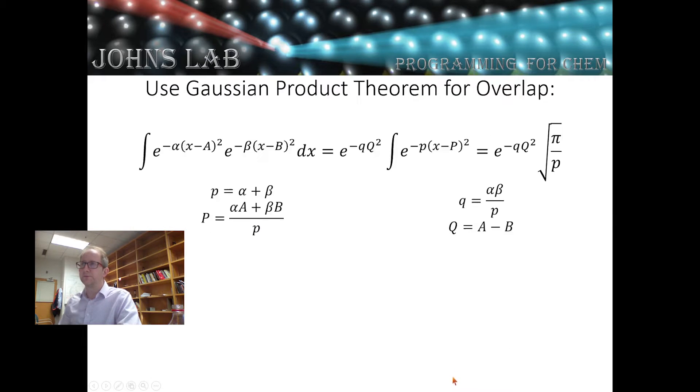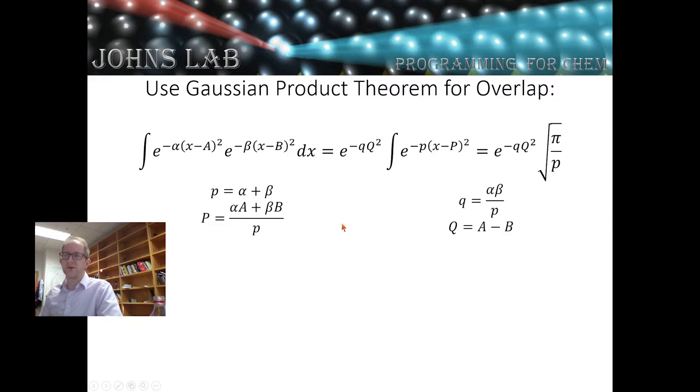For the overlap matrix, all we need to do is for each combination of one-dimensional Gaussian functions, what is the new Gaussian? And then what is the integral for that?